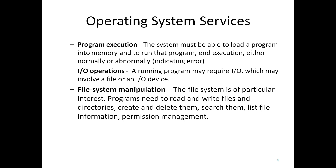The next service is file system manipulation. A file is where we store content or data. Programs need to read and write files and directories, create and delete them, search them, list file information, and perform permission management. The main operation is read and write. We can also create or delete directories and files, search for particular information in a file, list all file information, and manage permissions. These are the different file system manipulation services.